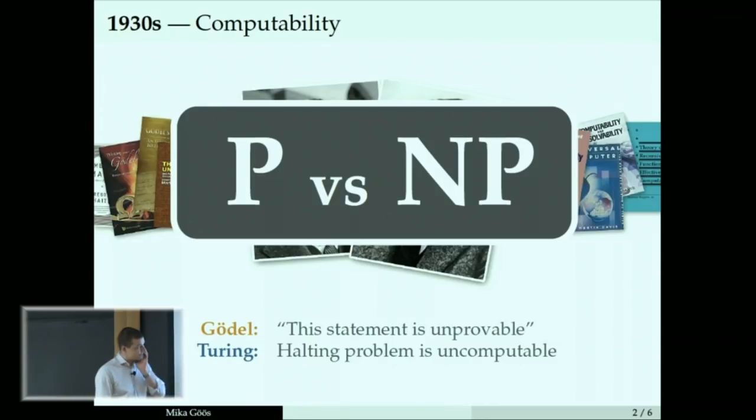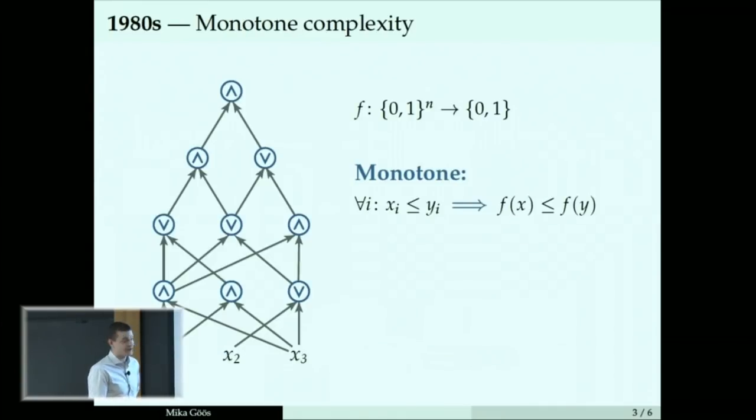Nobody knows how to attack it. A few decades back, people were more optimistic. If I rewind to the 1980s, one line of reasoning back then was that maybe we can't understand general algorithms, but at least we could start by trying to understand restricted models of computation.